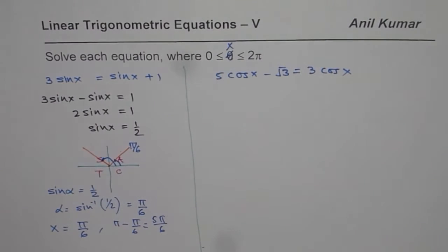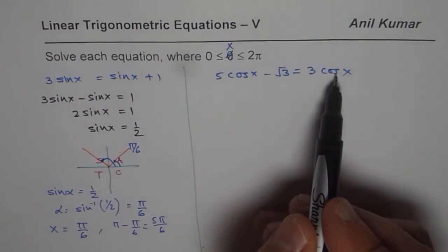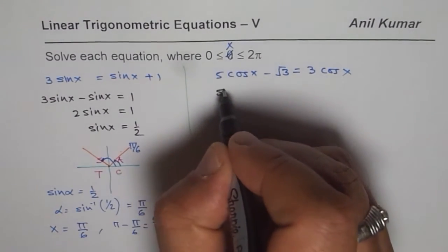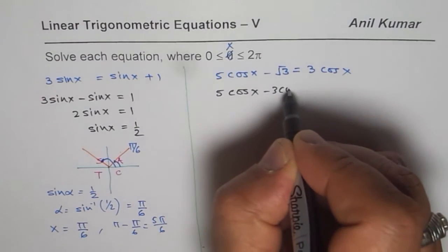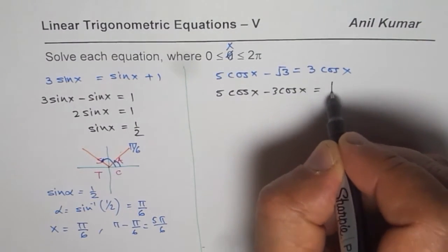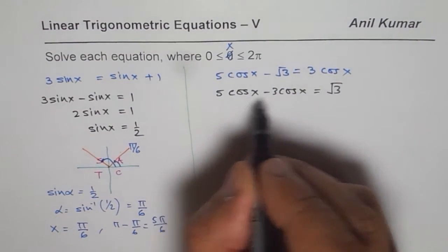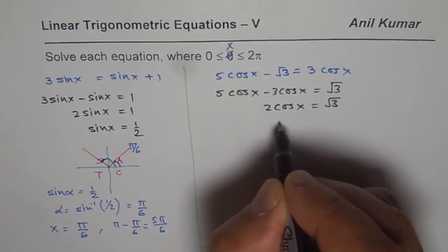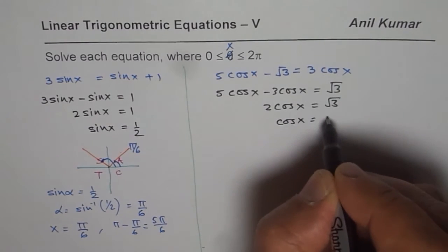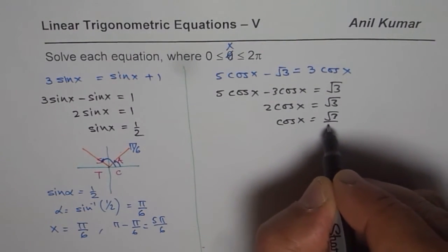Now let us take up the second equation. Let us bring all the cosine terms to the left side. So we have 5cos(x) minus 3cos(x) equals to square root of 3. 5 minus 3 is 2. So we get 2cosine(x) equals square root of 3. Or we can say cos(x) equals square root of 3 over 2.